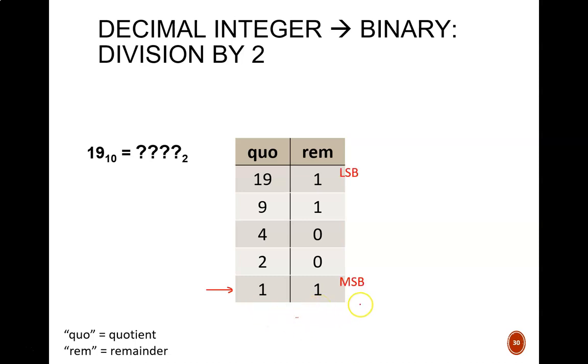We have the answer here, we just need to read it correctly. The most significant bit is at the bottom, and least significant bit at top. So, we need to simply read from bottom to top, and there we have the binary value. Good news! It matches what we saw on the previous slide.